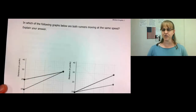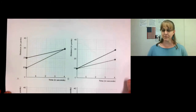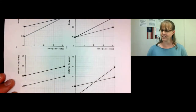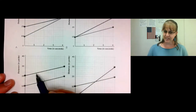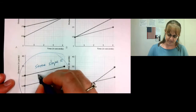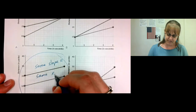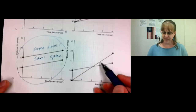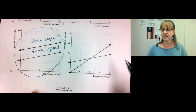In which of the following graphs are both runners moving at the same speed? Explain your answer. Remember, speed is the slope. So which lines have the same slope? That would be these two — they have the same slope, which means they have the same speed. We can easily understand these two graphs, but this one's a little bit confusing, so let's talk about it.